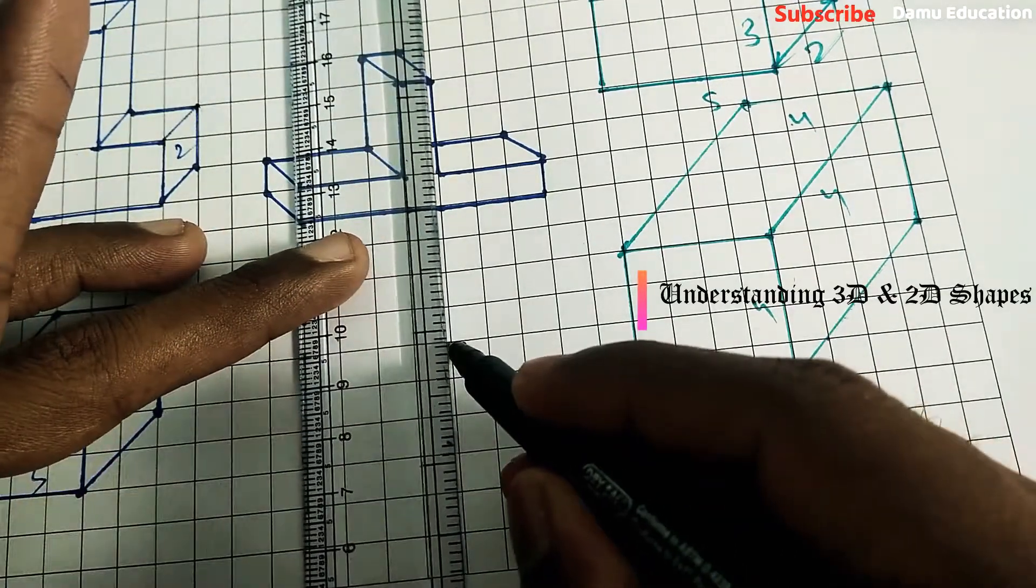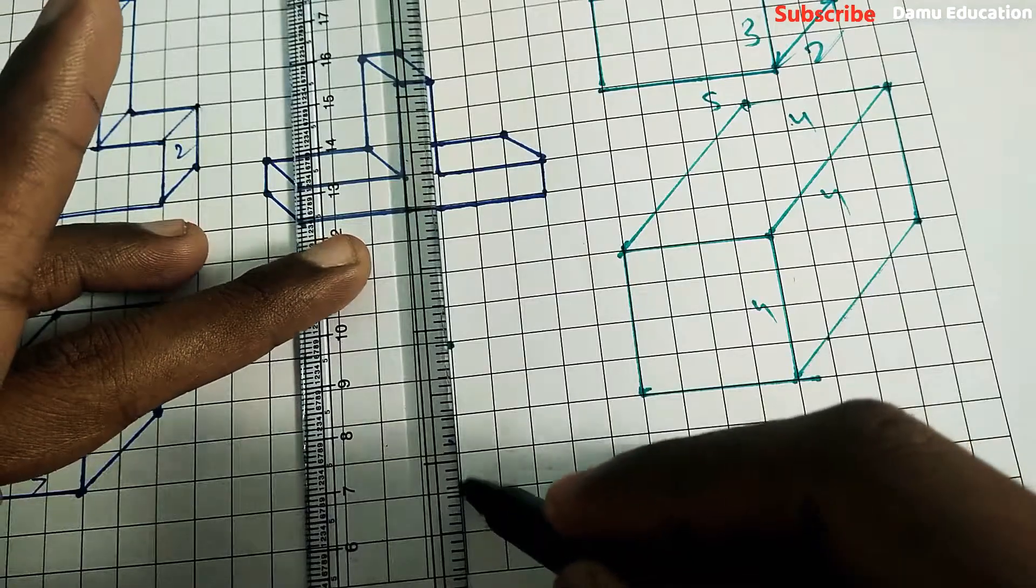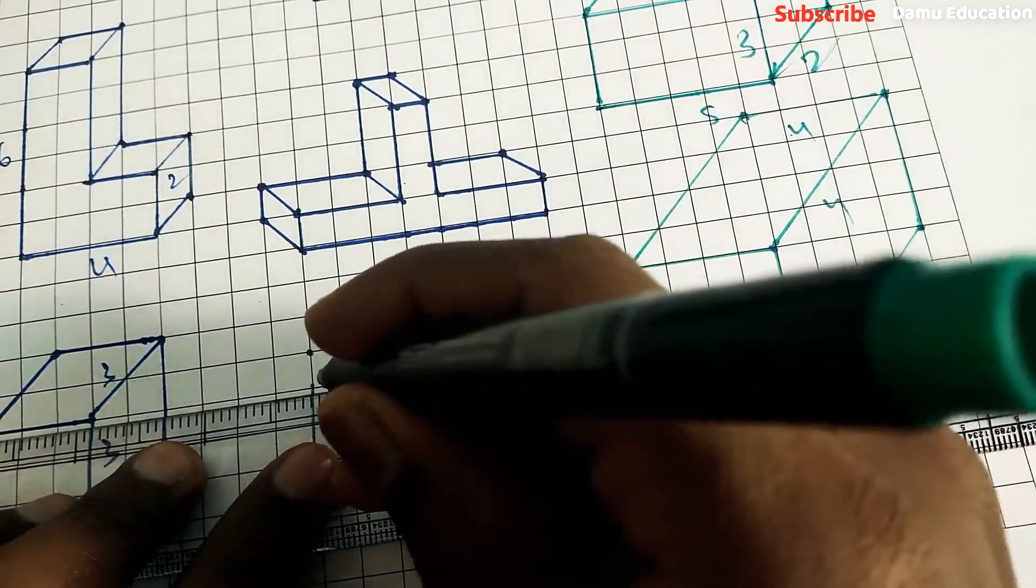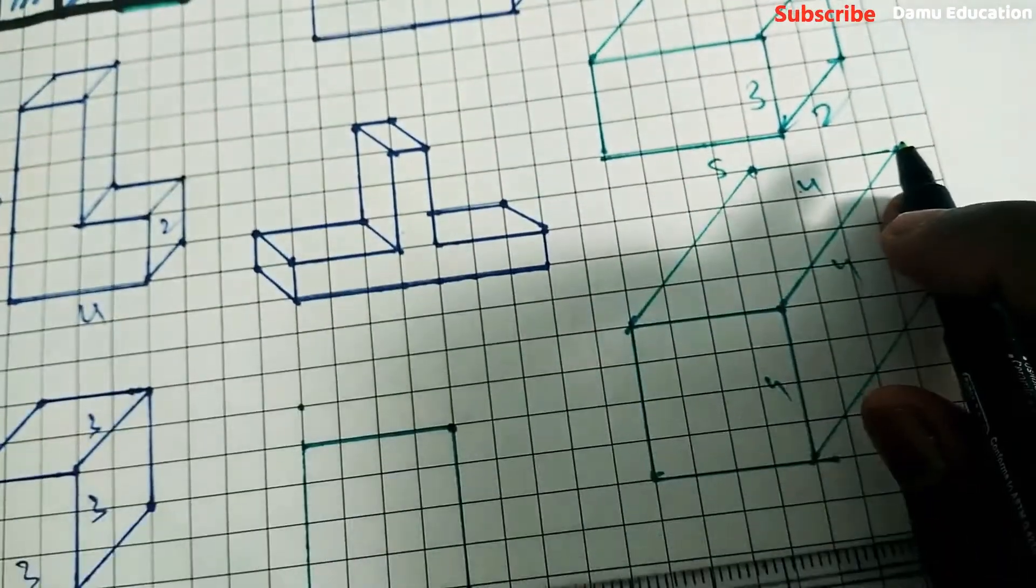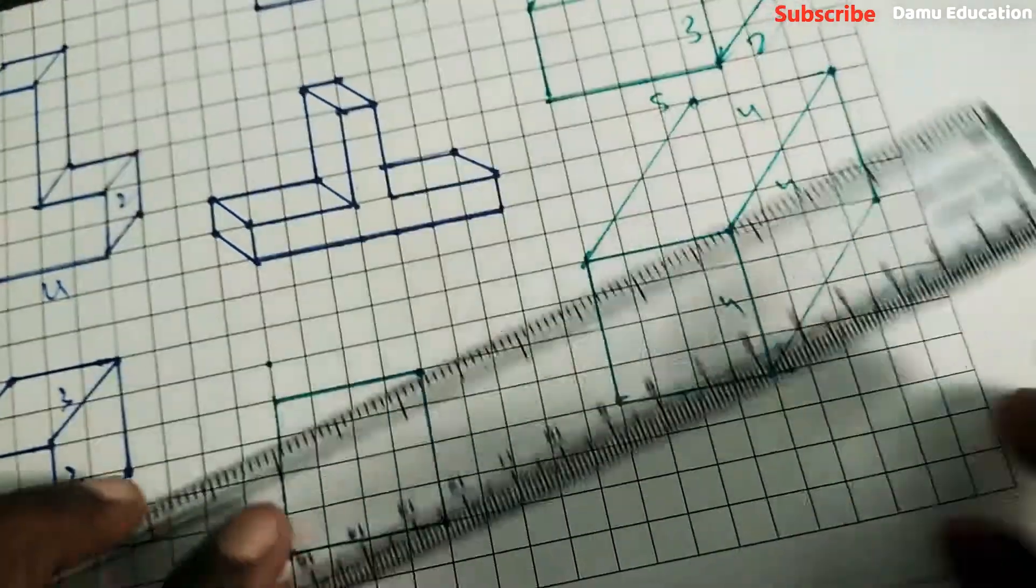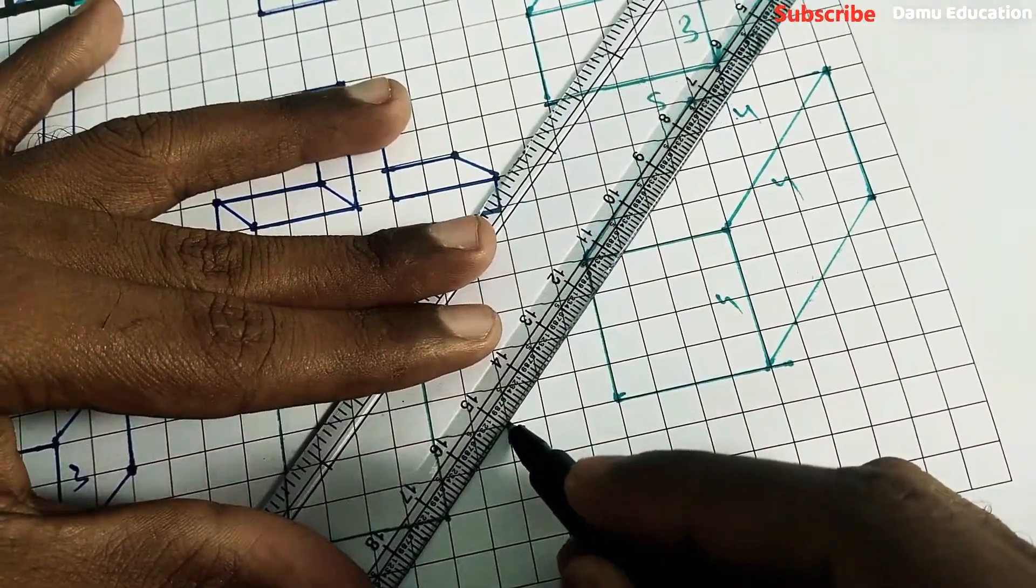And here just from here: 1, 2, 3, 4. You can draw like this also, no problem. So here: 1, 2, 3, 4. Here: 1, 2, 3, 4. Just we'll take this as 2. This is also 4.